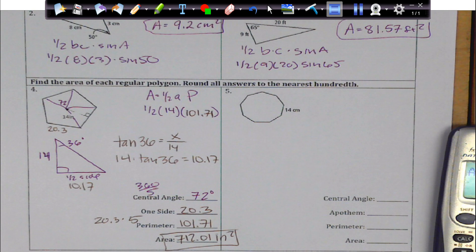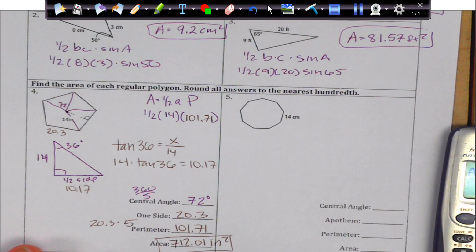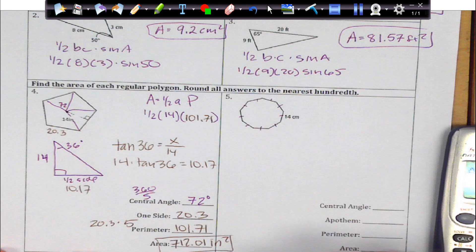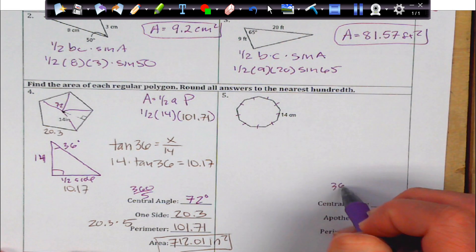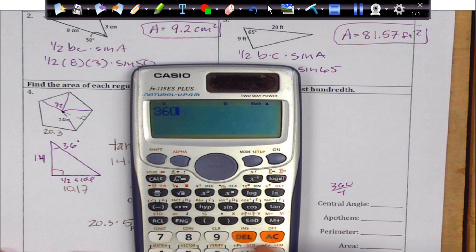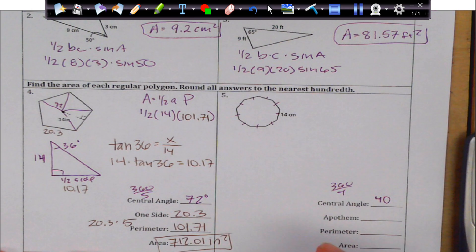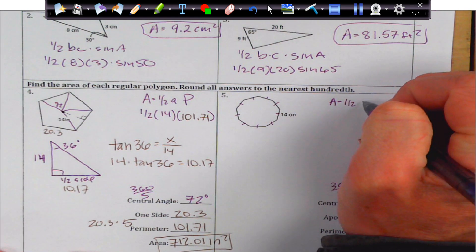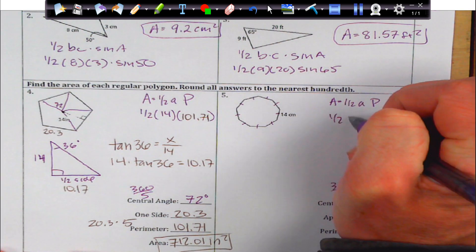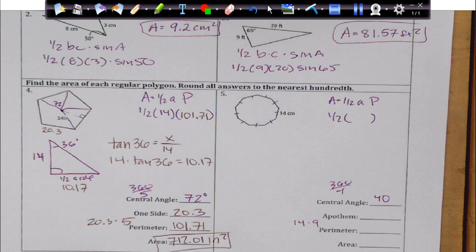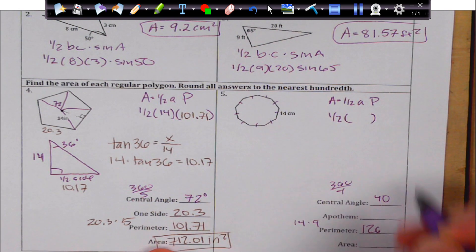Next one, number 5. We have a shape — let me double check how many sides this is. 1, 2, 3, 4, 5, 6, 7, 8, 9 sides. It's 9-sided. So the central angle is going to be 360 divided by 9, which is 40. The apothem I don't know, but the perimeter should be pretty easy to find. The perimeter should just be 14 times 9 because I have 9 sides. So I just do that in my calculator: 14 times 9 gives me 126. Pretty easy.